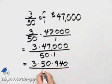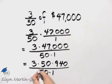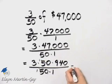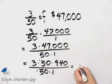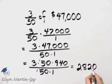And then in my denominator I have 50 times 1. Notice then the 50s divide out. And our answer is then 3 times 940, and 3 times 940 is 2,820.